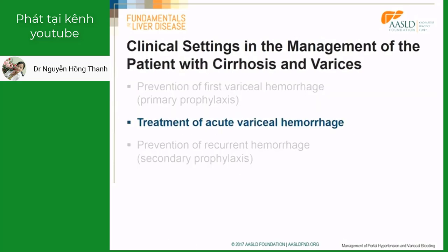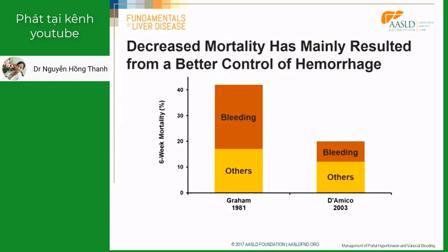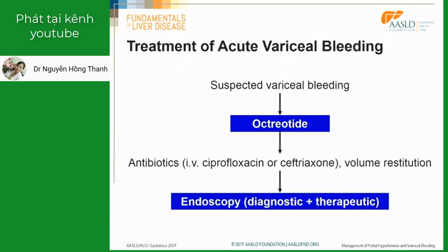We move now to the treatment of acute variceal hemorrhage when primary prevention fails. Mortality from acute variceal bleeding has greatly decreased in the last few years — it was over 40% in the 1980s and has decreased to less than 20% in series from 2003. This was mainly due to a decrease in mortality directly related to bleeding, so that now over 70% of the deaths during acute variceal bleeding are not directly related to ongoing bleeding, but to complications such as bacterial infection, renal failure, and liver failure. So if we want to improve the prognosis of acute variceal bleeding, we have to protect the liver, protect the kidney, and prevent infections.